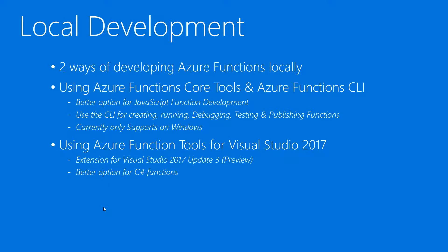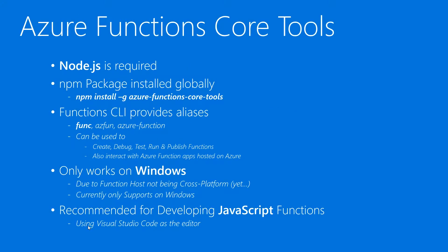This is a better option for C# functions, and both these options are at the moment only supported on the Windows platform. This is mainly because the function host where the functions are actually running is not yet cross-platform. To use Azure Functions Core Tools, you need to have Node.js installed, and the Azure Functions Core Tools NPM package needs to be installed globally.